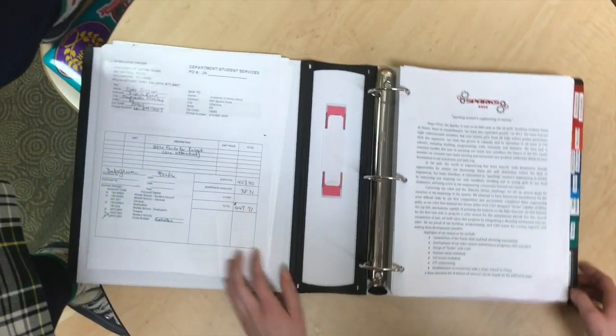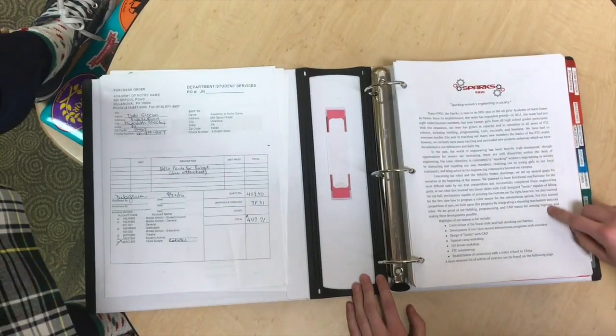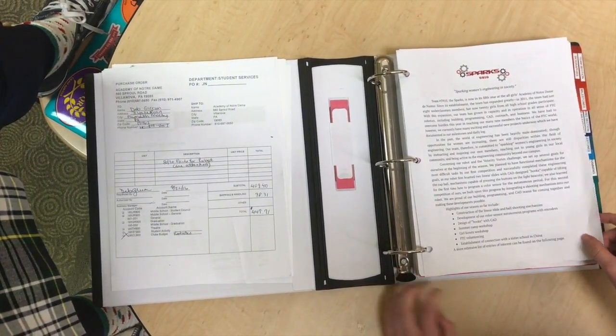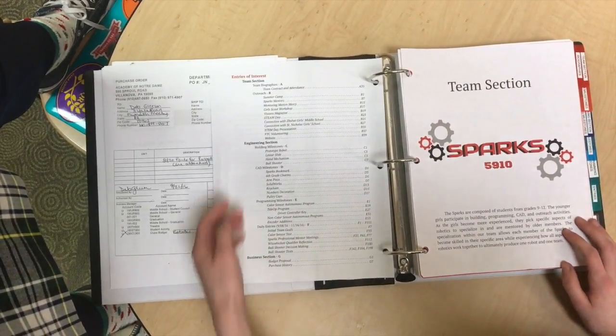Next, you need to include a summary of your team and its activities over the course of the season. You should also include highlights of the team's season and a list of entries of interest that you want the judges to look at in particular.